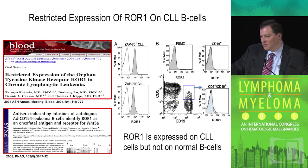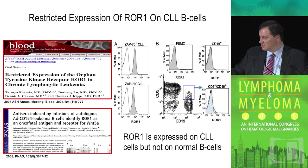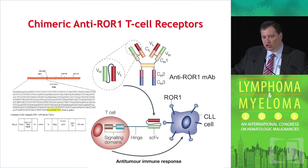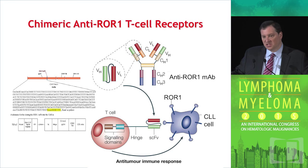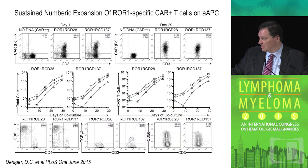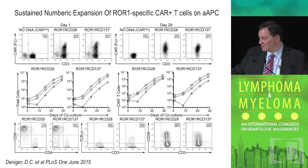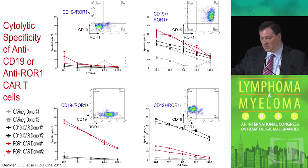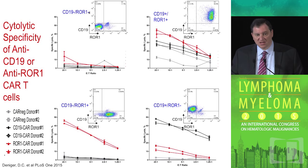The expression of ROR1 is restricted very nicely to CLL B cells, which would be a way to really improve the targeting of our CAR T-cells and diminish other toxicities. The current CAR T-cell being used at University of California San Diego uses the CD28 co-stimulatory molecule and the single chain fragment variable region directed against ROR1. They do get nice expansion of the CAR T-cells, and the hope is that this will translate into very nice responses and long-term outcomes.